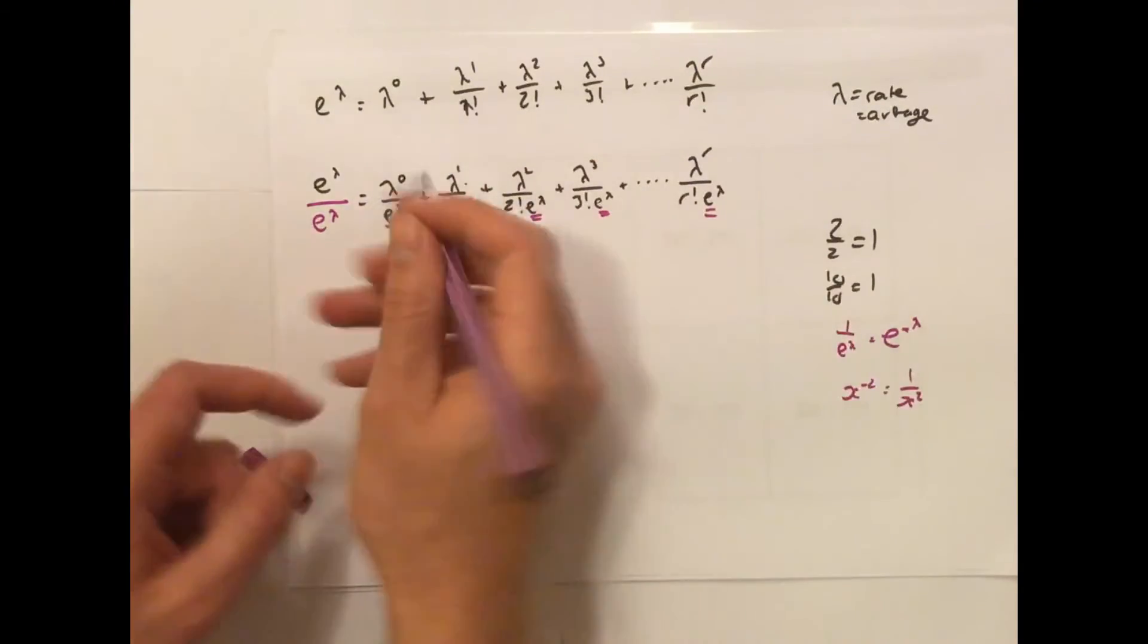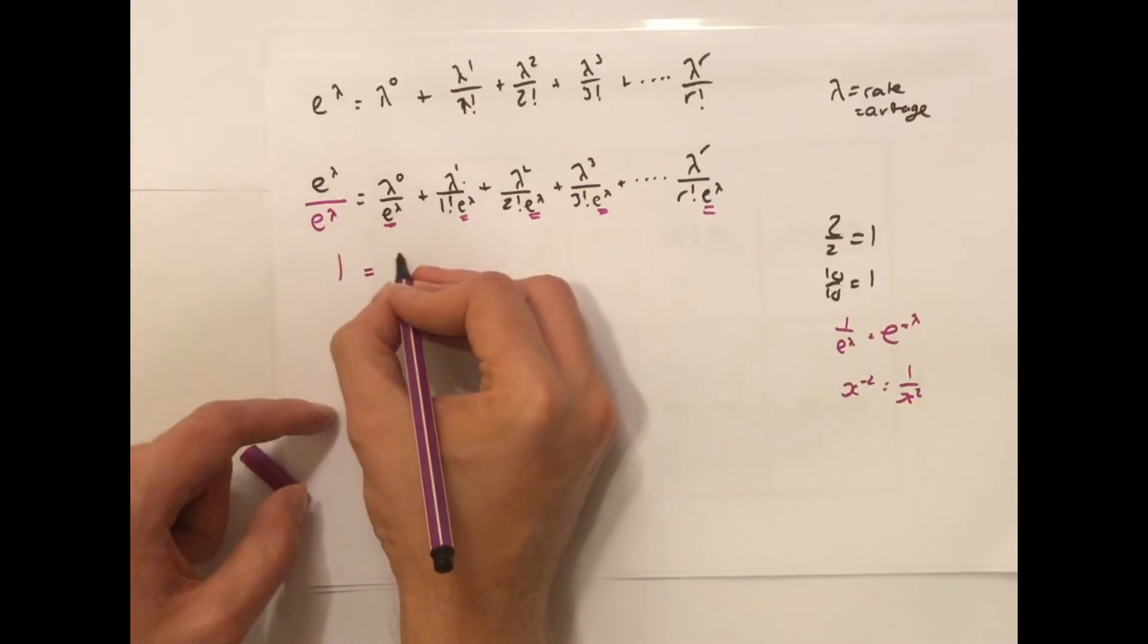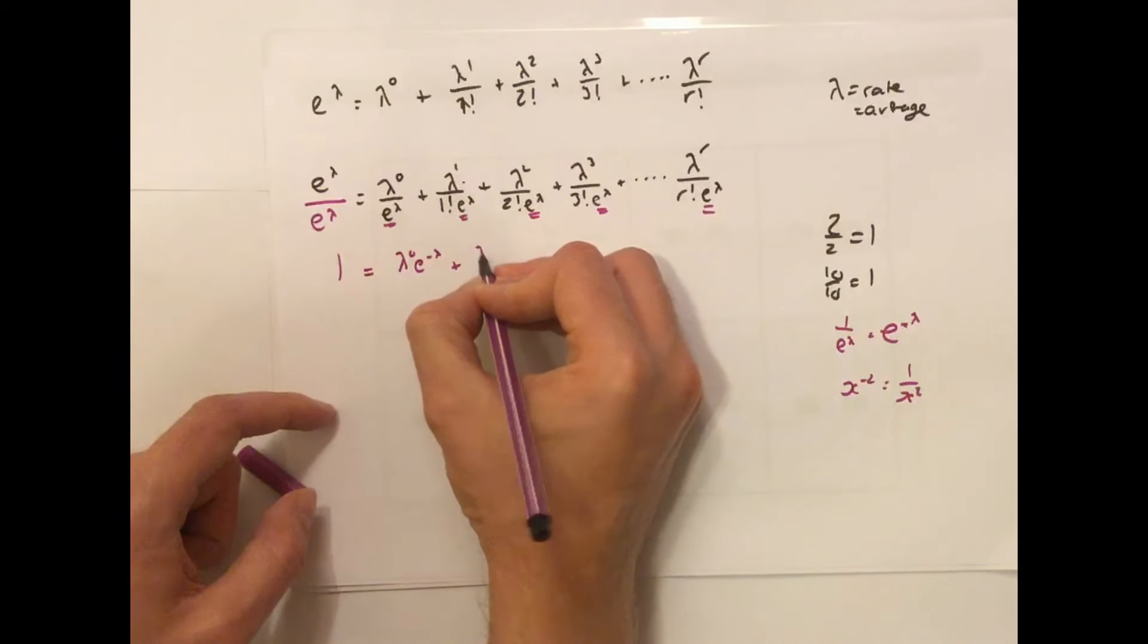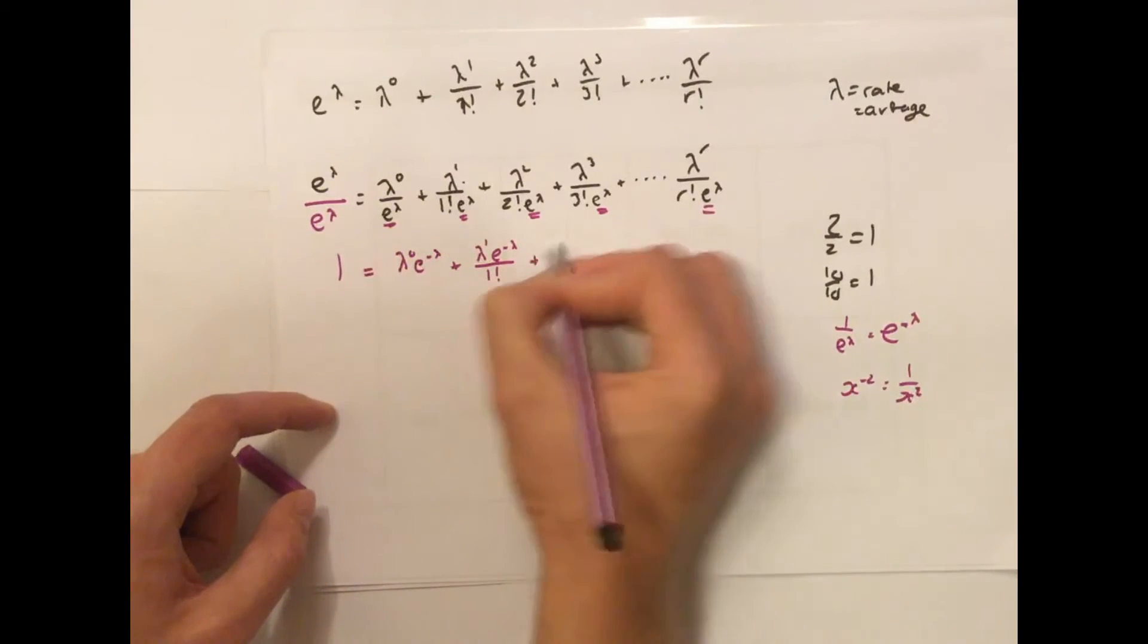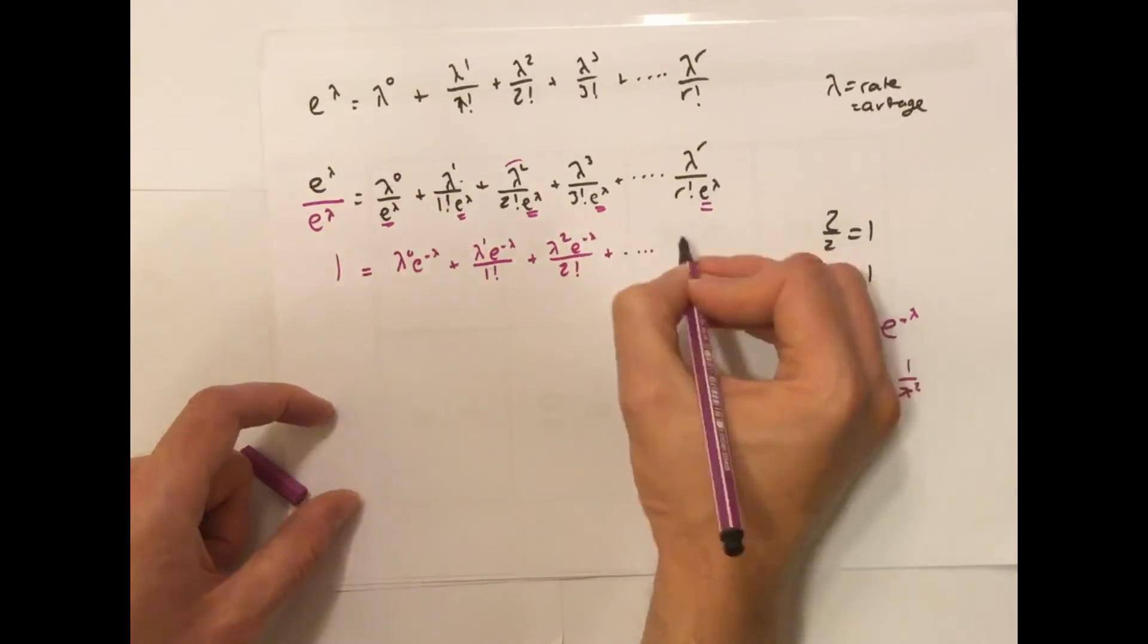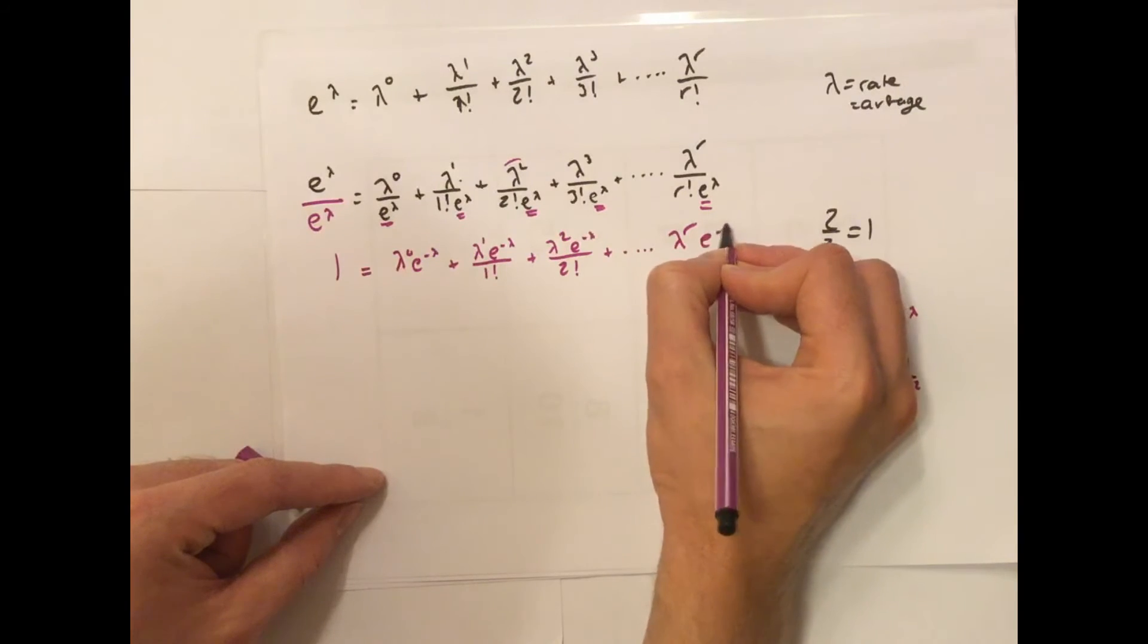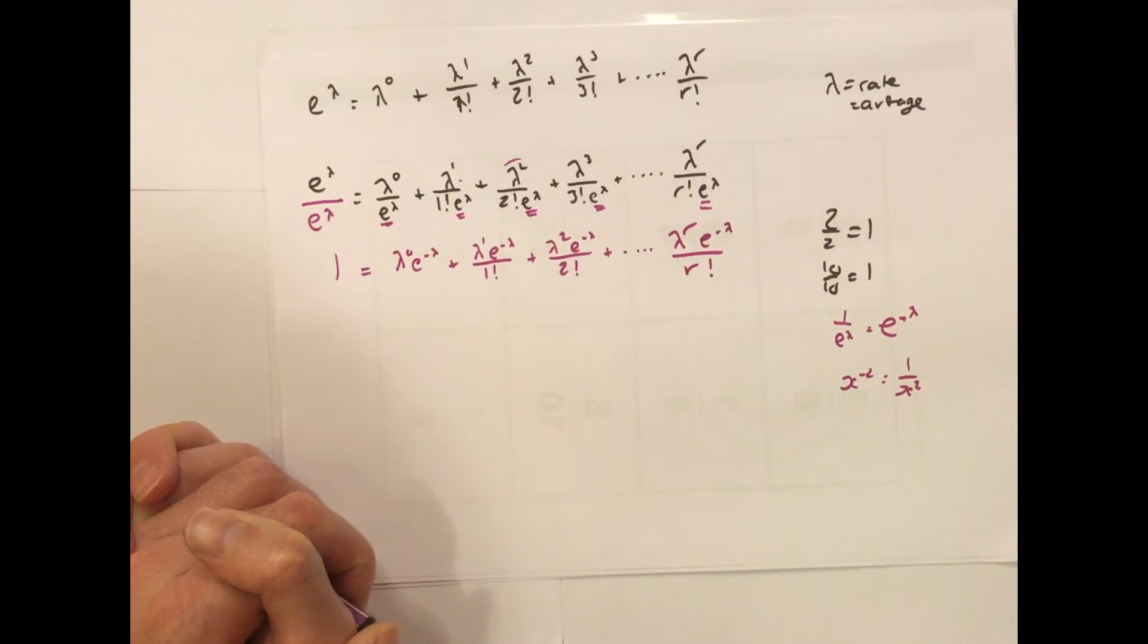So, actually, we're going to take all of these e terms to the top. This is now going to be 1 = λ^0·e^-λ + λ^1·e^-λ/1! + λ^2·e^-λ/2! + etc., all the way to λ^r·e^-λ/r!. And that is your Poisson distribution.